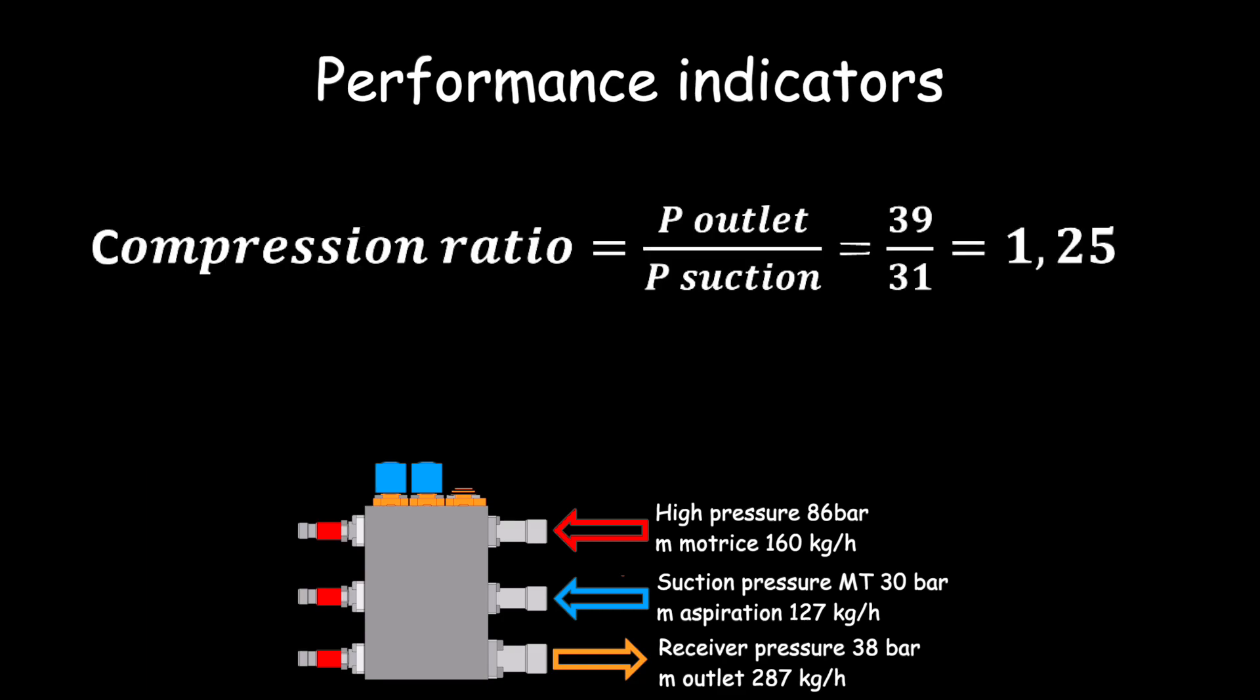Like a compressor, an ejector has a compression ratio; it is the second indicator of performance. With 39 bars at the outlet for 30 bars at the lift, the compression ratio is 1.25.